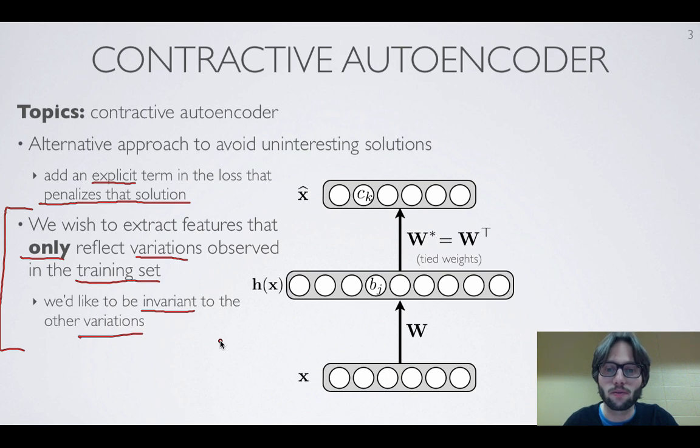Now here, that's something we'll try to avoid. We try to encourage the neural network to only have hidden units that reflect variations that are specific to our training set and that are otherwise, as much as possible, invariant to any other types of variation.